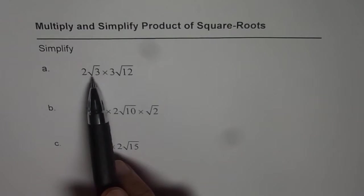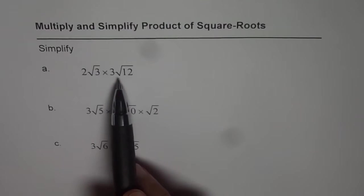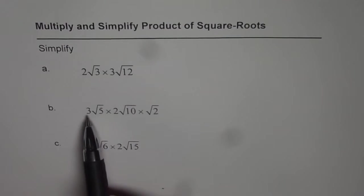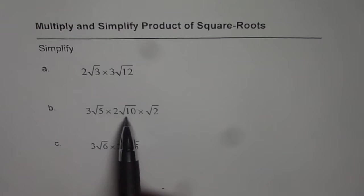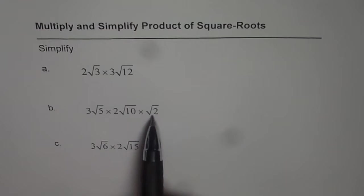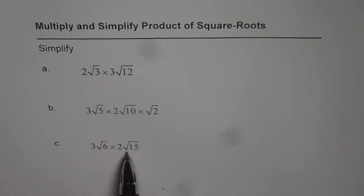The first one is 2√3 times 3√12. Then we have 3√5 times 2√10 times √2. And the third question is 3√6 times 2√15. You can pause the video, answer and then check with my solution. I will show you two different ways of doing the same thing.